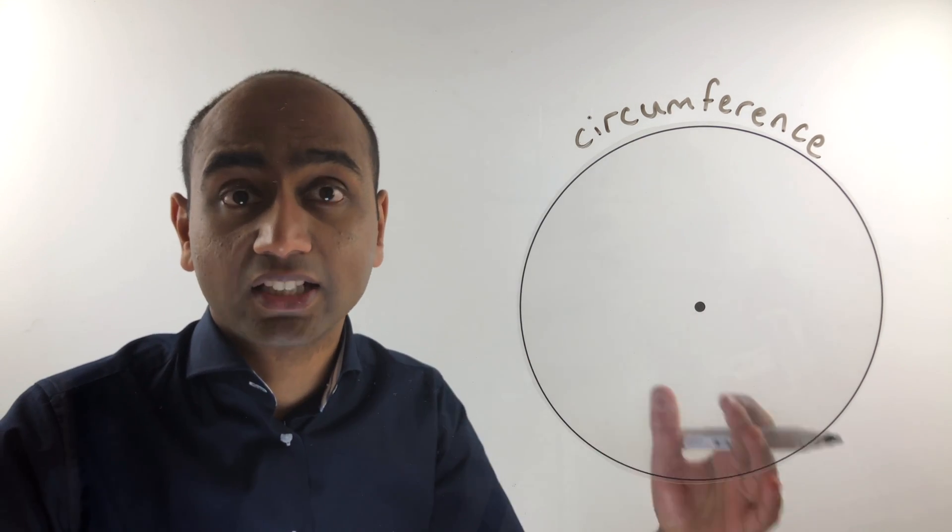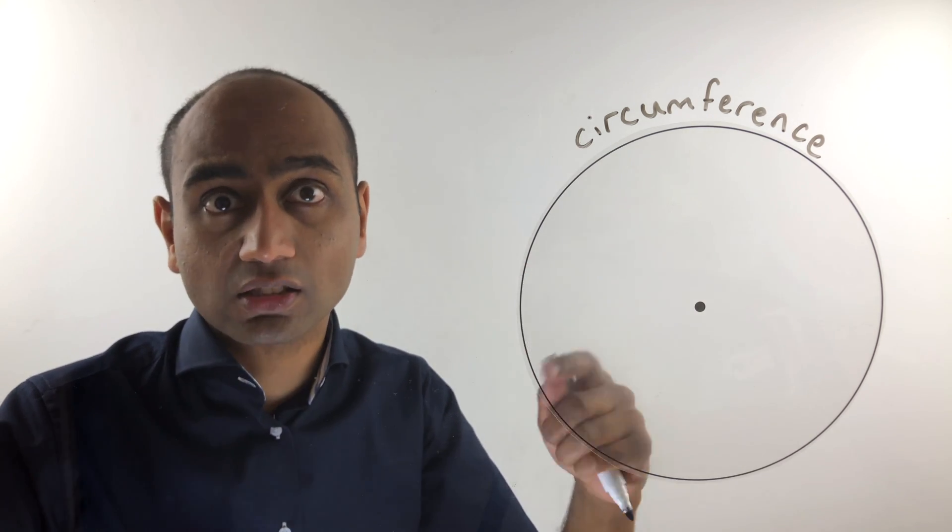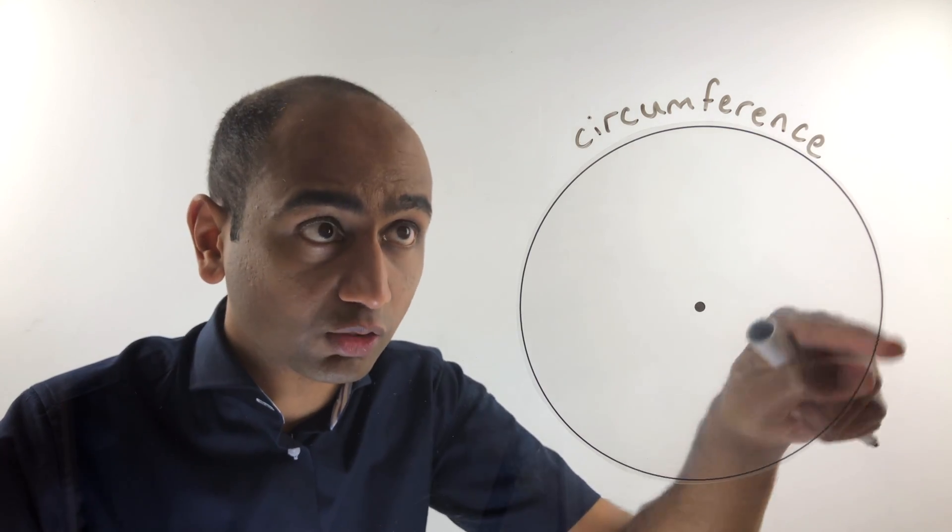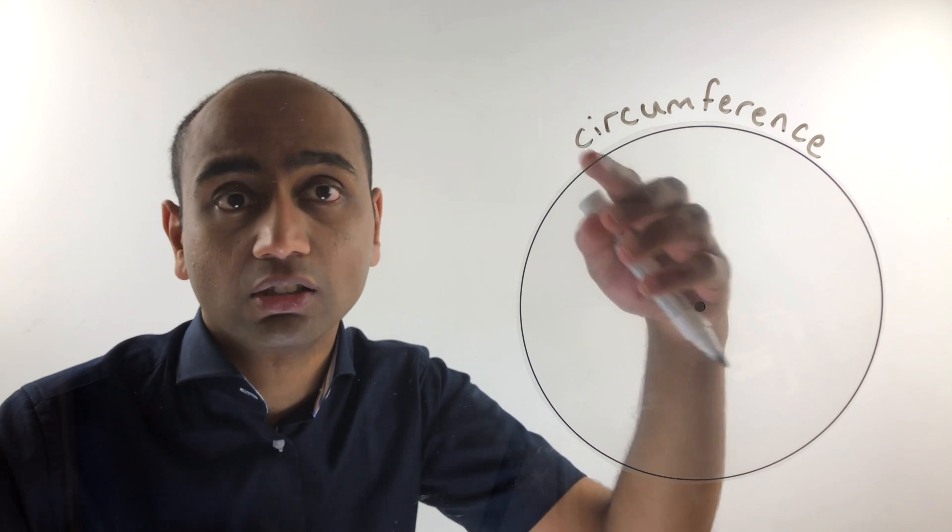Just like with radius and diameter, when someone says circumference, they could actually mean two things. We've already talked about one being basically the perimeter—the distance all the way around the circle—but they could also just mean this curved edge of the circle itself.